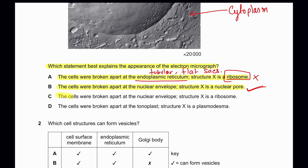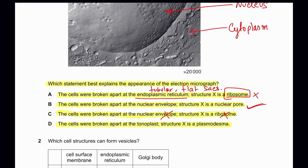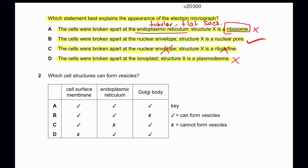Option C says cells were broken apart at the nuclear envelope and structure X is a ribosome — we know nuclear envelope does not have ribosomes. Option D says cells were broken apart at the tonoplast and structure X is a plasmodesma — the structures are too small to be plasmodesmata and we don't see any barrier between two cells. We only see a large round object within a single cell's cytoplasm. So B is the correct answer.